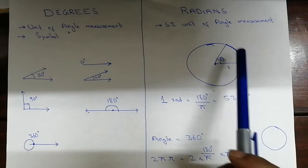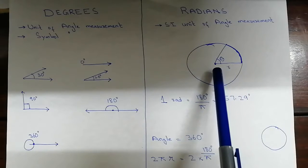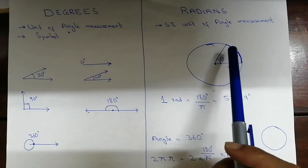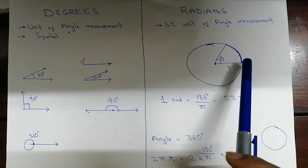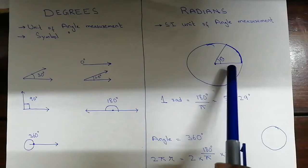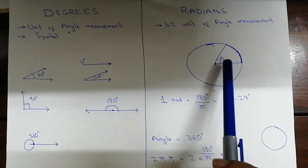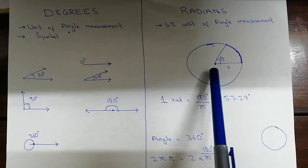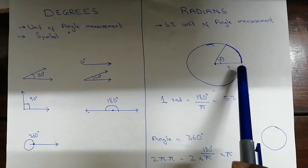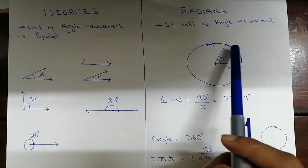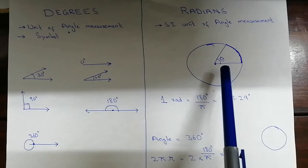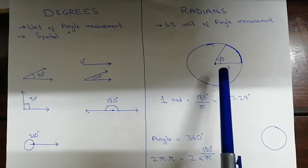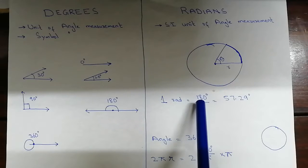Now let's understand radians. You can see here that this is a circle, and this is the radius. When an angle is produced and the length of the arc is equal to the length of the radius, then that angle theta is called one radian. So one radian is the angle at which the arc length equals the radius length.